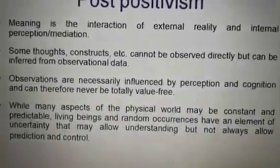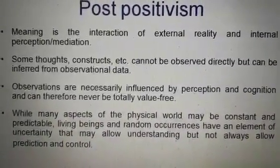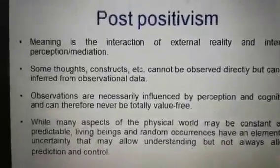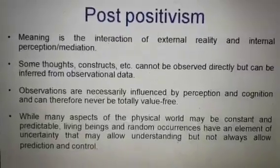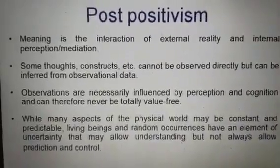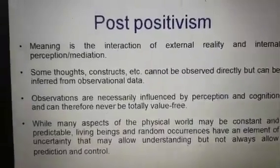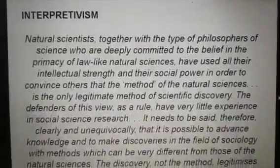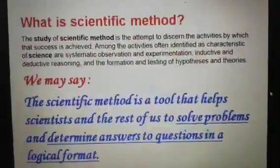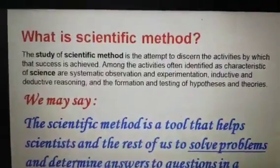This is why in the post-positivism research method, we have to use both qualitative as well as quantitative approaches. Because nowadays, as social scientists, we have to research on living beings, and living beings are not predictable. So we can interpret this with the social science perspective. We now have to distinguish this topic with the scientific method.